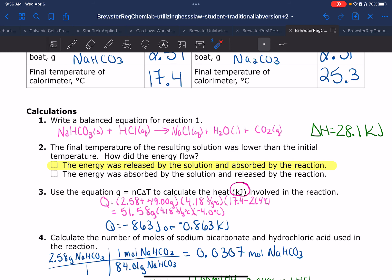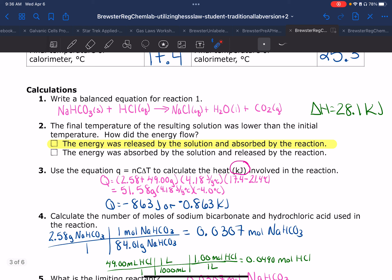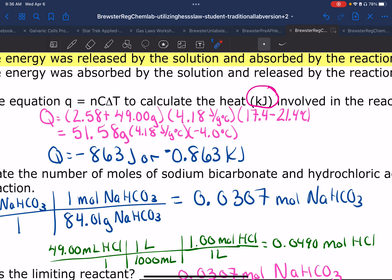I start with the 2.58 grams of NaHCO3, and when I do my molar mass it weighs 84.01. I put that on the bottom, get rid of grams, and I calculate 0.0307. The next part is new to you with the HCl. I'm taking my 49 milliliters of HCl and I need to convert it over, so a thousand milliliters equals one liter. Then my molarity was one capital M, which is one mole per one liter.